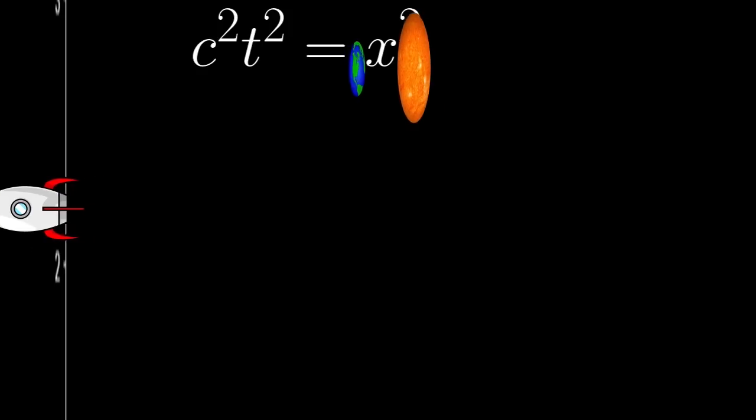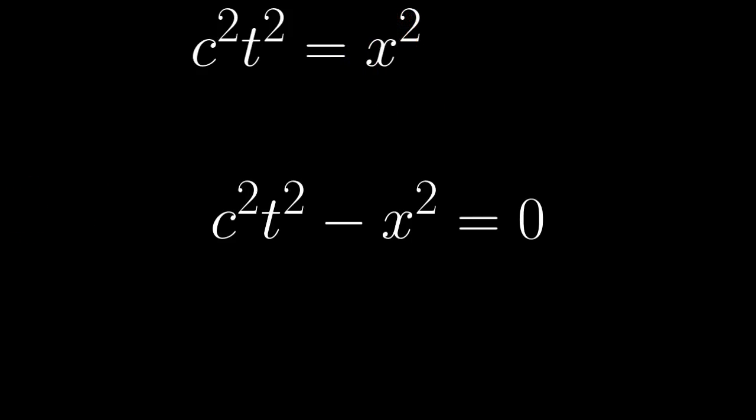No matter what frame you're observing from, however, there will always be no, or zero, difference between the distance that separates two events linked by light and the light travel time between those events.